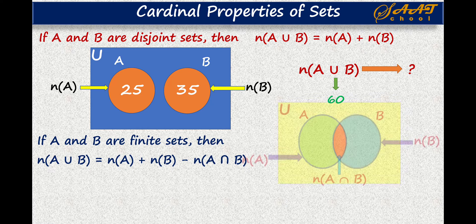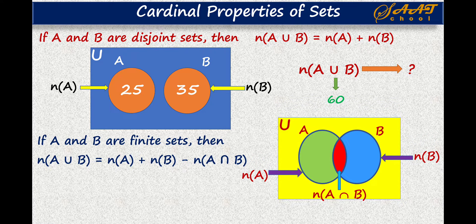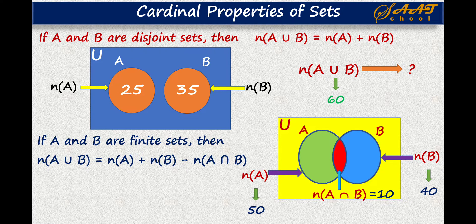Now in the case of an overlapping set, the cardinal number of A union B is the sum of N(A) and N(B) minus N(A intersection B). So to find the cardinal number of an overlapping set, we subtract the intersection portion. For example, if N(A) = 50, N(B) = 40, and N(A ∩ B) = 10, then N(A ∪ B) = 50 + 40 − 10 = 80.